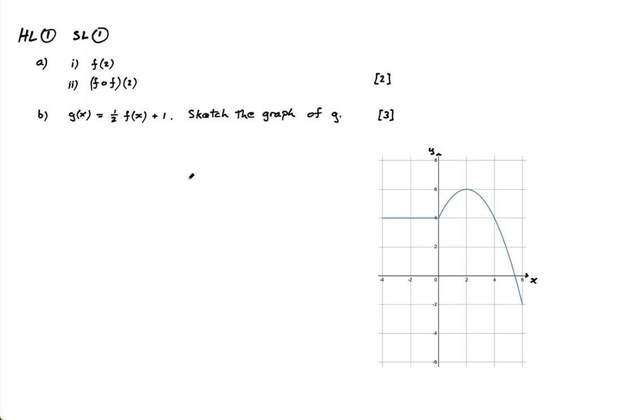Okay, question one for both HL and SL. So we're given a graph, we're not told what the function is, and it says find f of 2. So there's two parts to part A, and there's two marks, so it's literally just one mark each.